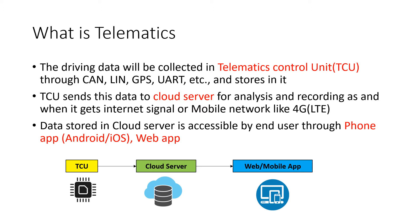The driving data will be collected in the Telematics Control Unit (TCU). This TCU is one sort of ECU which will collect data from protocols like CAN, LIN, and also has GPS, UART, etc. It stores the driving data we discussed, and once collected, the TCU starts sending data to the cloud server if the vehicle is connected to the internet signal.